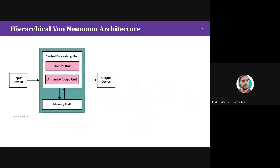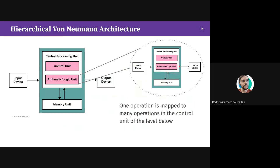We can use the same idea to extend the Von Neumann architecture to a hierarchical Von Neumann architecture. The Von Neumann architecture defines a processing unit with a control unit and arithmetic unit that interacts with memory. To extend this to a hierarchical model, the arithmetic unit is itself another Von Neumann model. One operation at a higher level maps to many simpler operations at the level below — so one operation here executes as many simpler operations in the machine below.